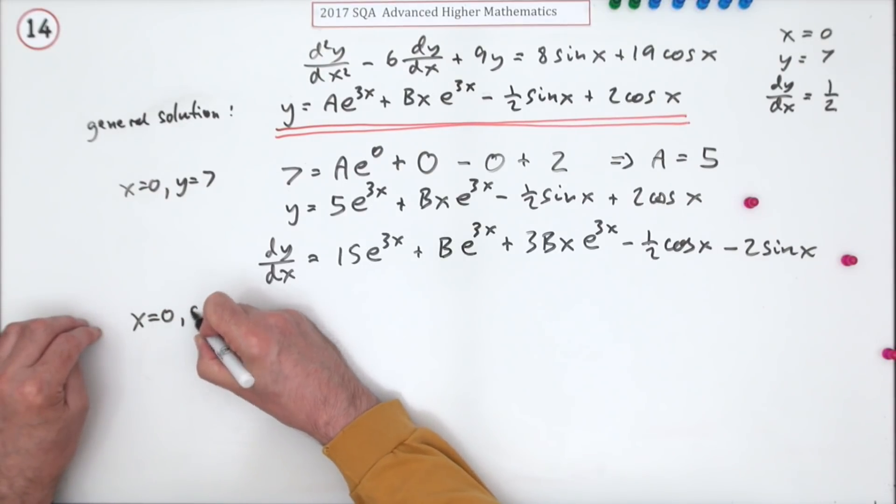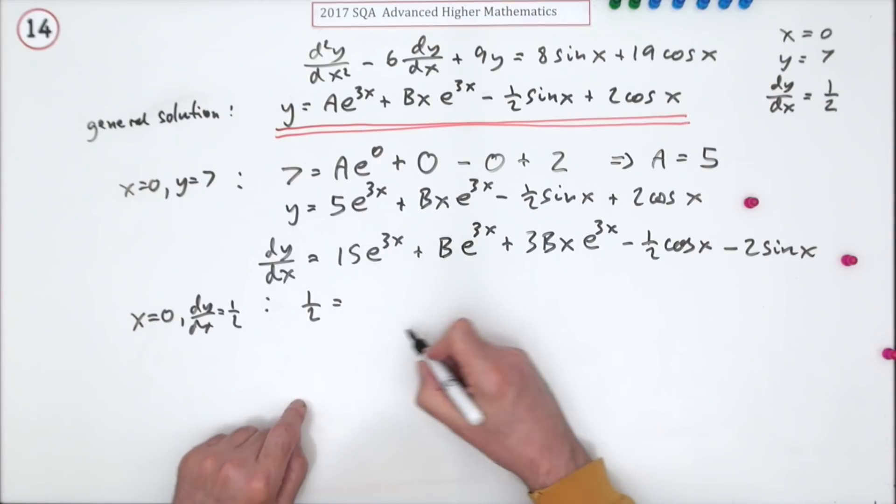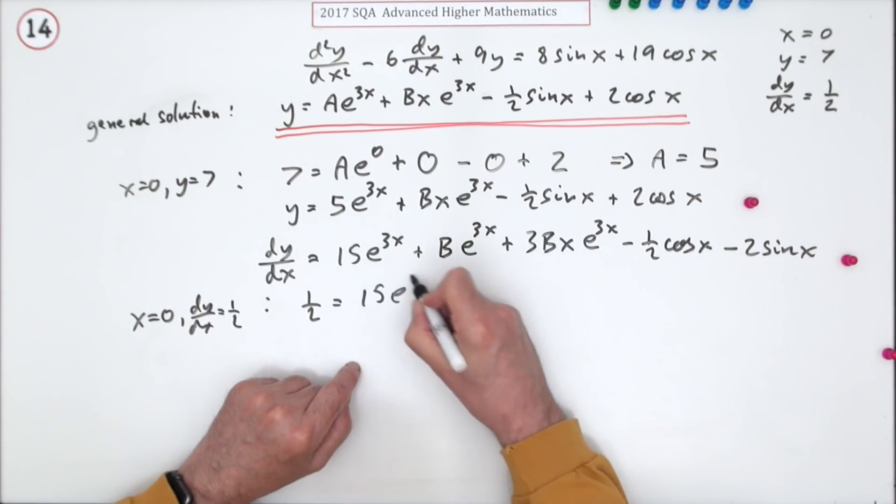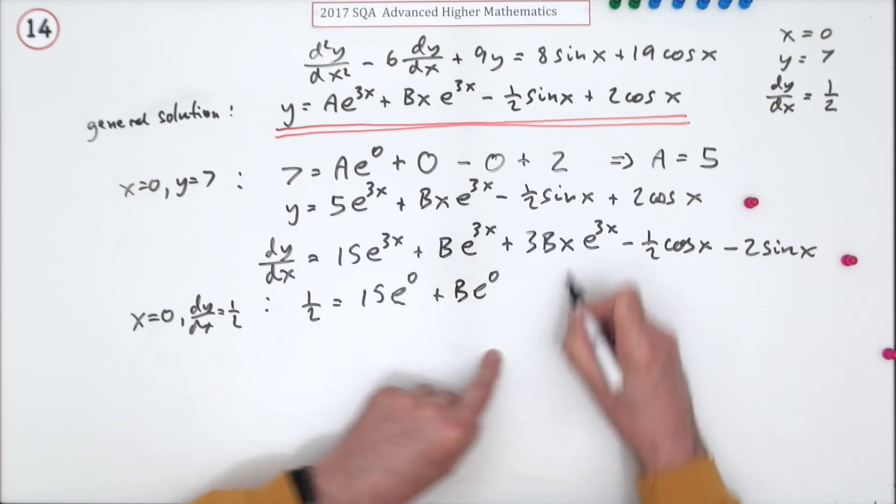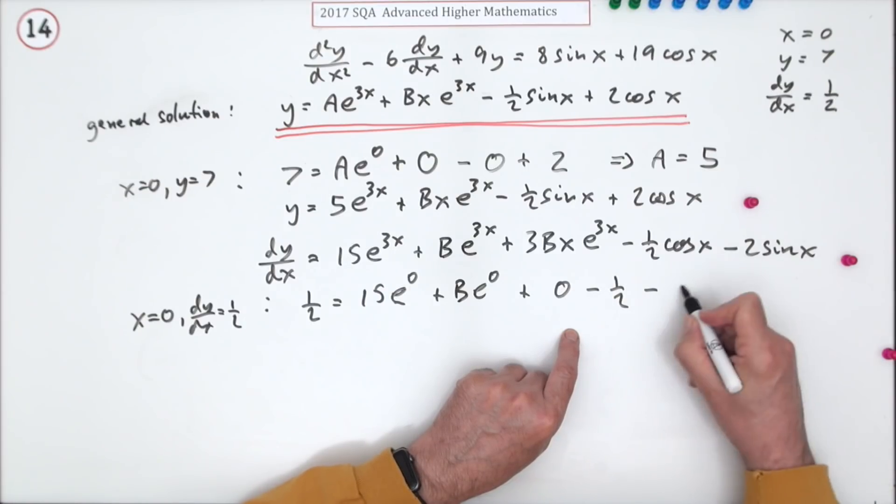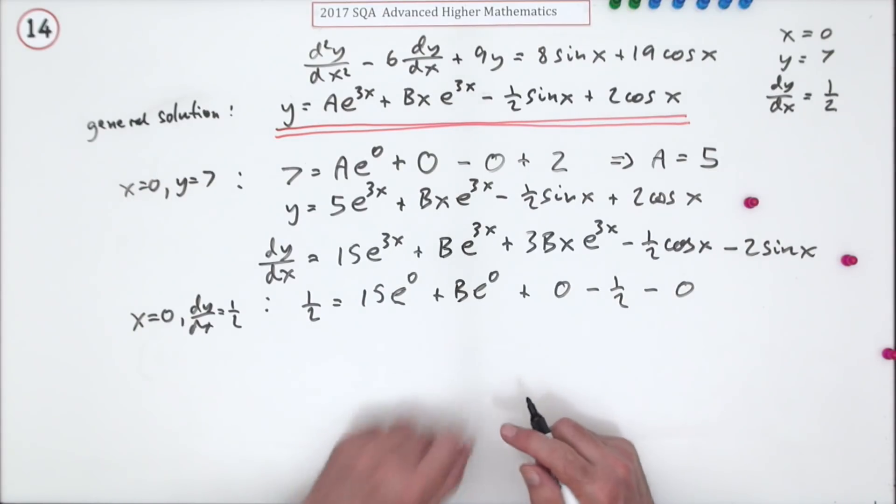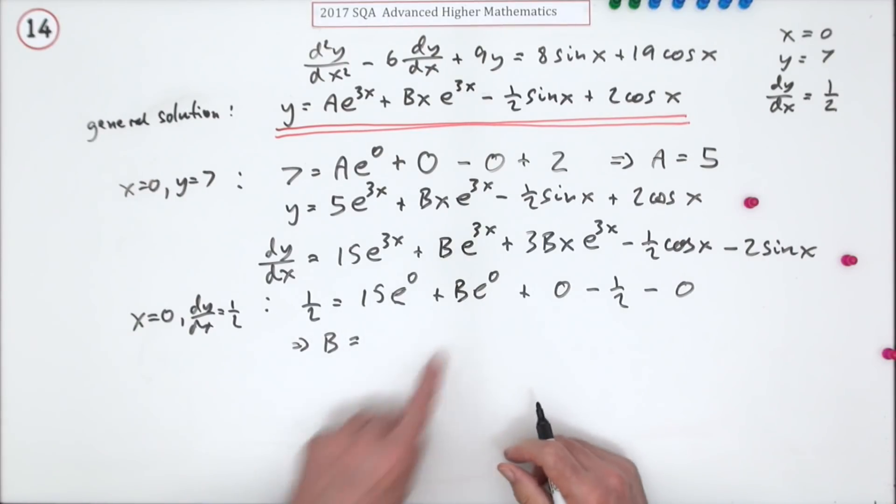Now put in the second of the initial conditions: when x is 0, dy/dx equals a half. So you've got this a half equals 15, that'll just be e^0, plus B that'll be e^0, there's an x there so that's 0, cos of 0 is 1 so that's minus a half, sine of 0 is 0, so there's only the one mention of B.